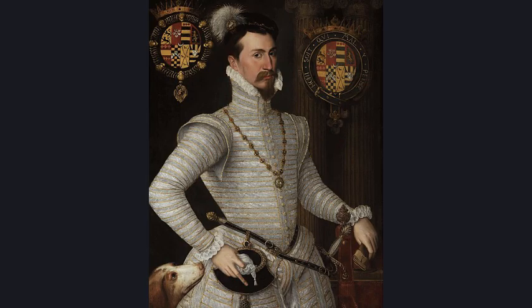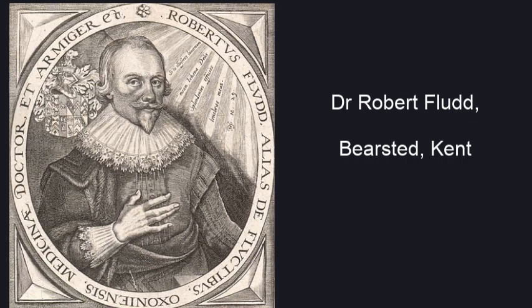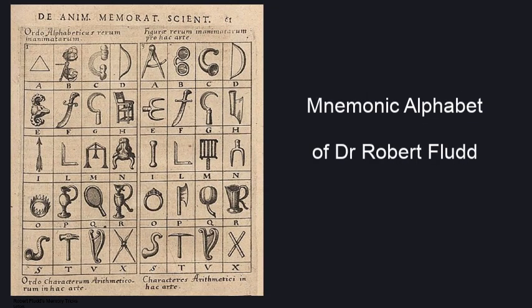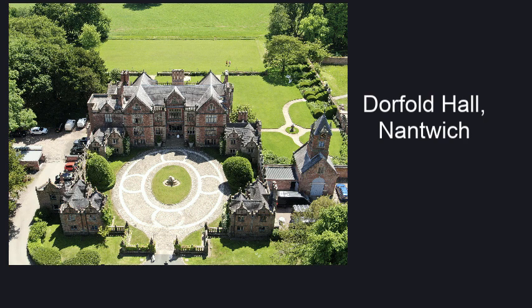I connected him to Robert Flood of Bearstead, Kent, who produced the mnemonic alphabet shown in an earlier video. In one of my first videos I showed a similarity of two portraits, one of Edward Koch and the other of Roger Wilbraham of Dorfold Hall, painted by Marcus Gerhardt the Younger.